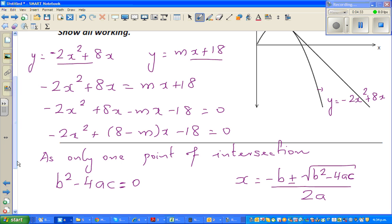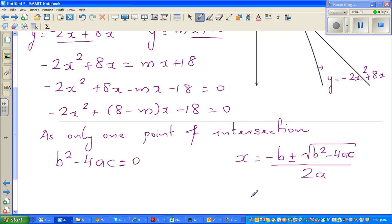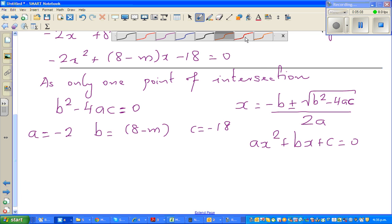We will check this of course in the graphic calculator. So what's a when you compare, now you should be knowing ax squared plus bx plus c equal to 0 is the general form of a quadratic equation. So you can compare your a with negative 2, you can compare your b with 8 minus m and your c with negative 18. So let us put this back into this equation.